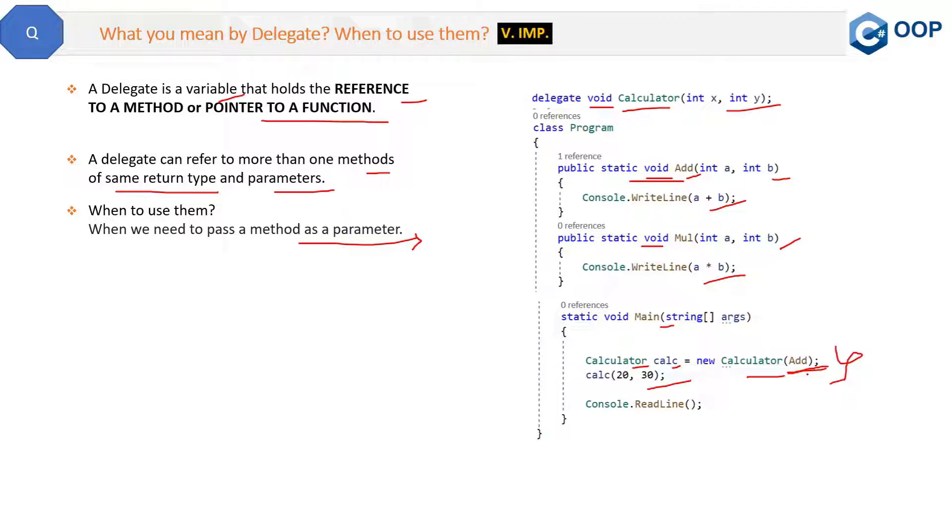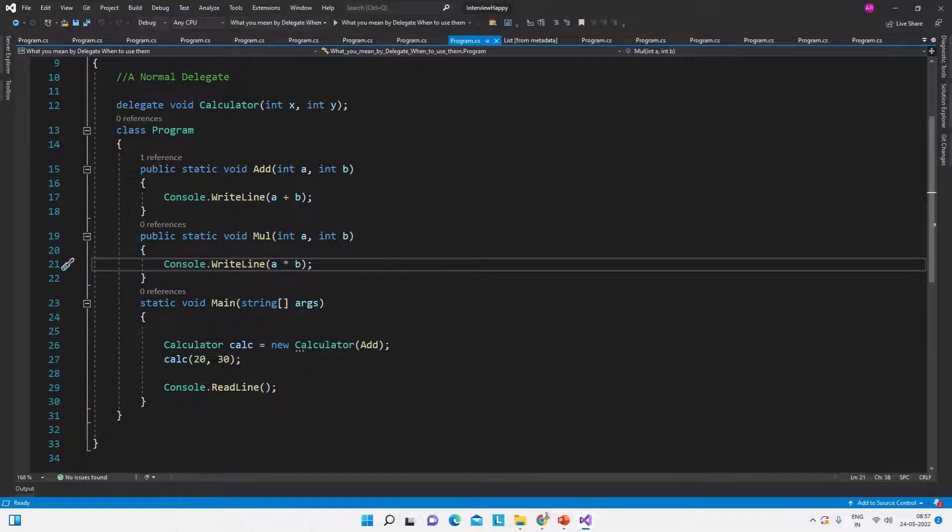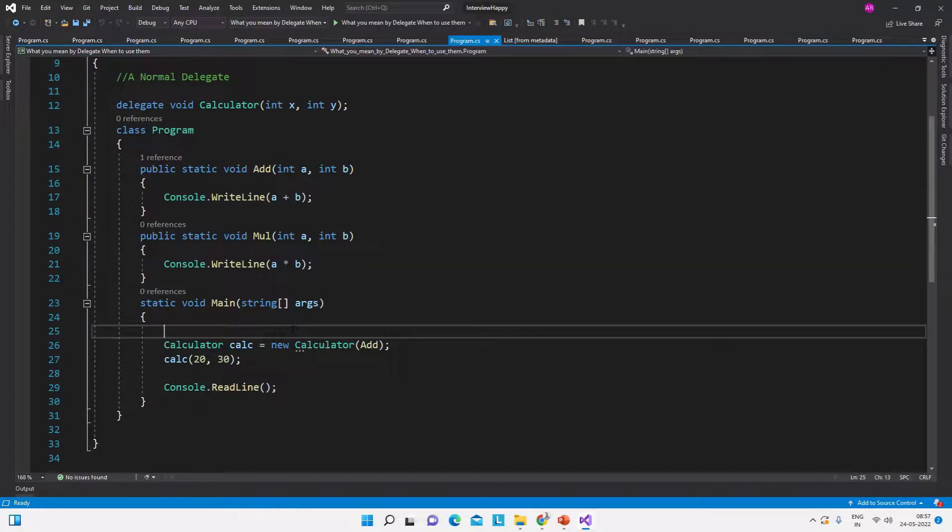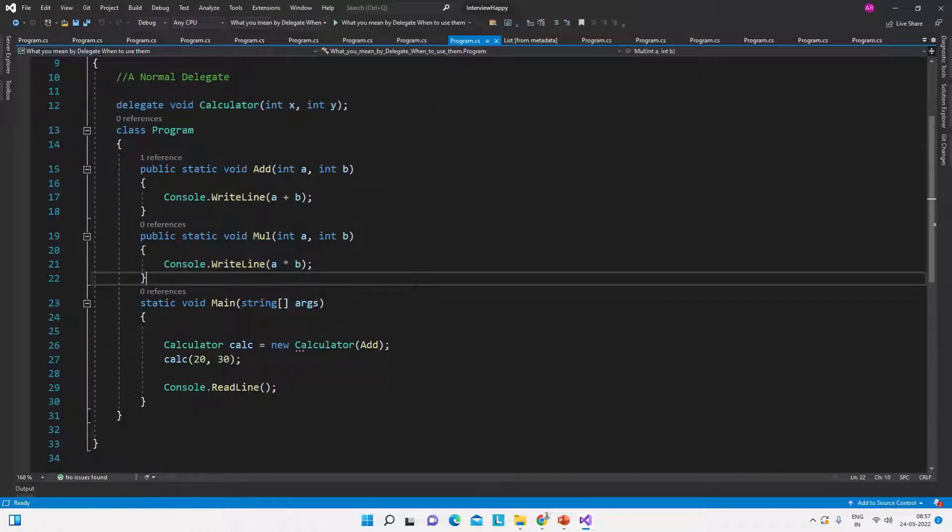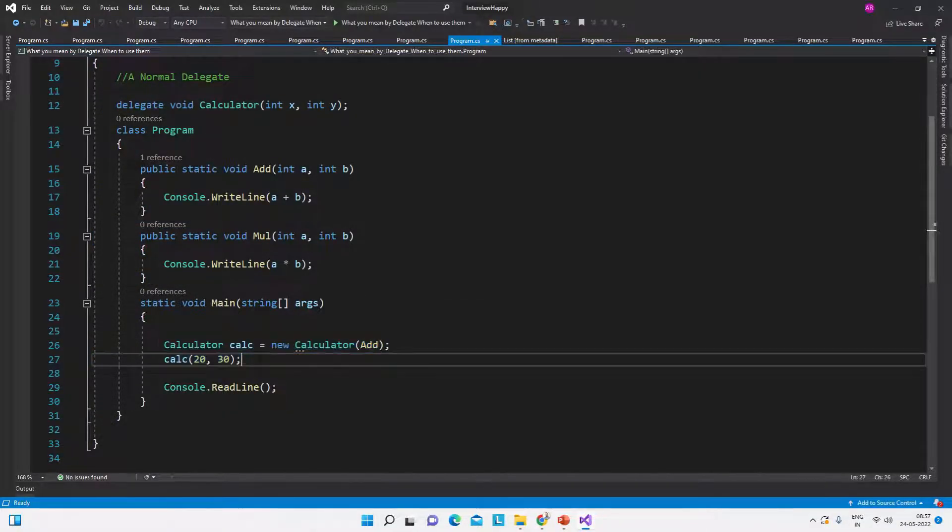So this is what is delegate, how to use delegate, and when to use delegate. Now let me show you the same thing in the code. So this is the delegate we were referring to. Here we have two methods, here we have declared the delegate, and here we are consuming the delegate.